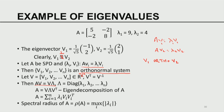Since Vᵀ equals V⁻¹, we multiply on the right by Vᵀ: AVVᵀ = VΛVᵀ. But VVᵀ equals the identity matrix I, so A equals VΛVᵀ. This is called the eigendecomposition of A.